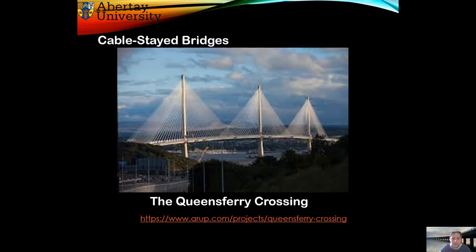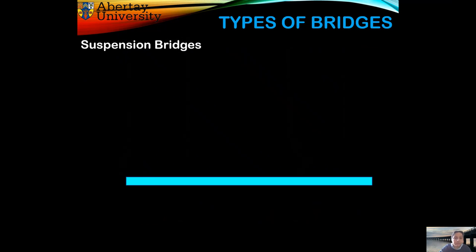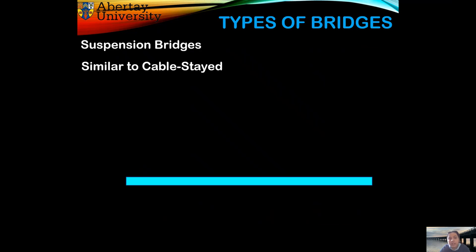The Queensferry Crossing is one example of cable-stayed bridges. The other type of bridge is referred to as a suspension bridge, and it's kind of similar to the cable-stayed bridges.